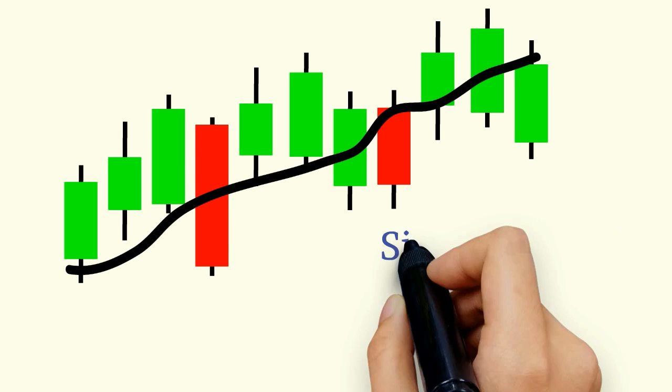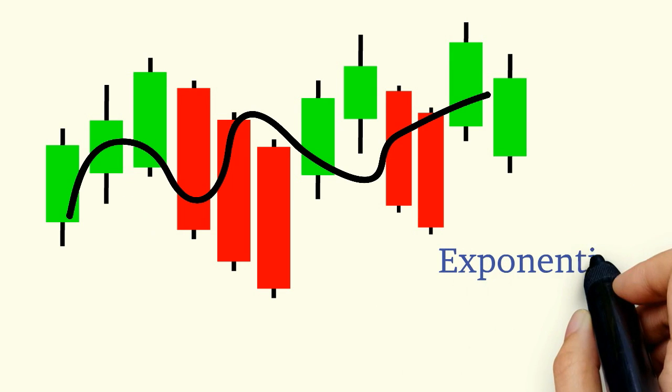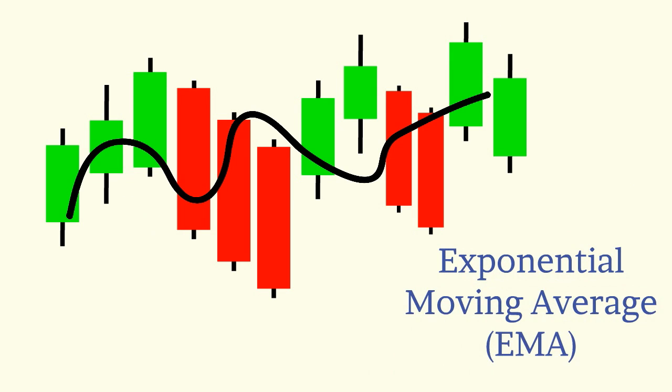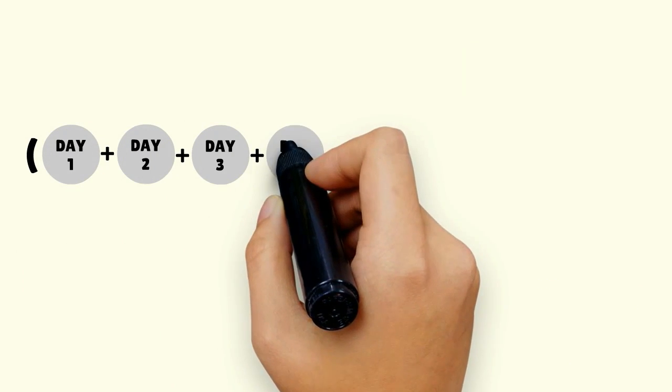The two most popular types of moving averages are the simple moving average, SMA, and the exponential moving average, EMA. An SMA is an average of closing prices over a certain period of time.